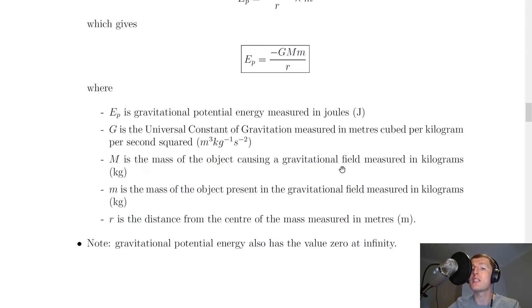Capital M is the mass of the object causing a gravitational field in kilograms. Small m is the mass of the object present in the gravitational field measured in kilograms. And R is the distance from the center of the mass measured in meters.